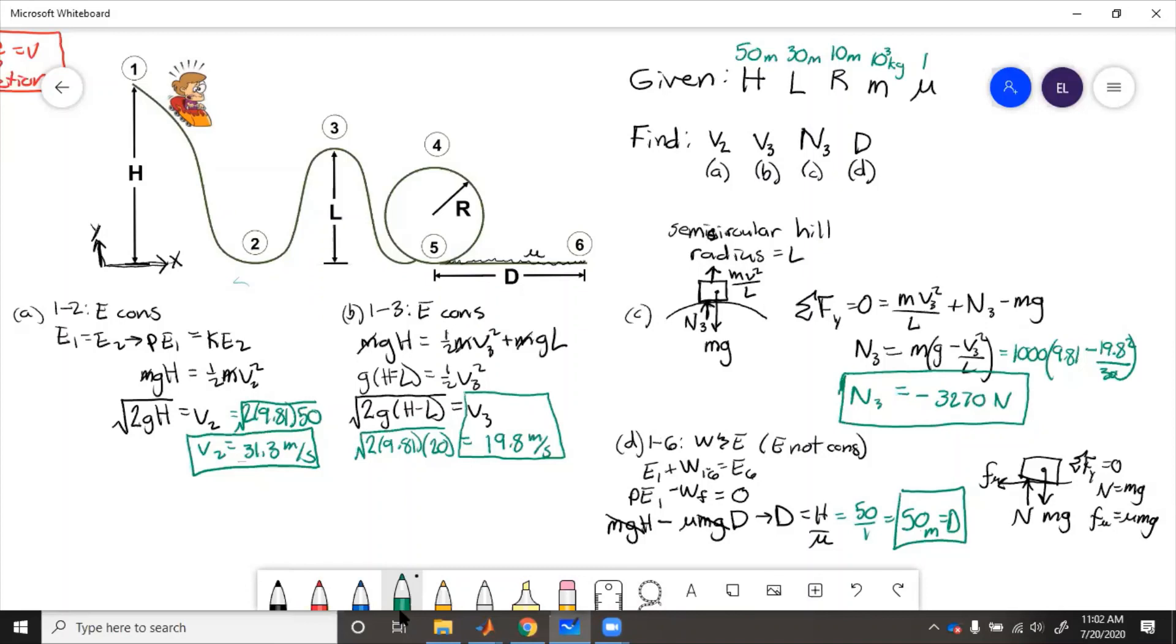So to recap this problem, if we want to find speed at two, speed at three, normal force at three, and stopping distance, what we need to do is draw a free body diagram, assign coordinate frame, and for each state, we identify if energy is conserved or if work is present, write the equations, solve for the unknown. Sometimes we need to solve from the free body diagram to get certain forces to put into the energy equation, or sometimes we just need to know the force, we just solve the force equation.